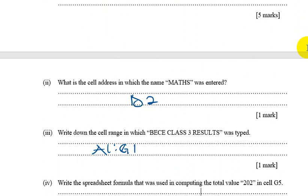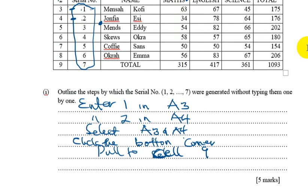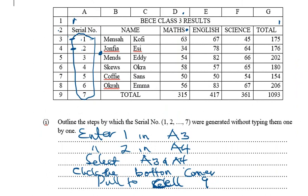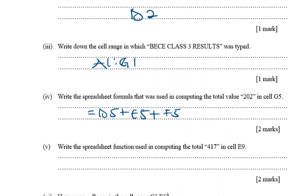The next part says: write down the spreadsheet formula used in computing the total value 202 in cell G5. Looking at G5, it is the addition of D5, E5, and F5. So the formula you write is: =D5+E5+F5. If you don't include the equals sign at the start, you are wrong — always begin with the equals sign.